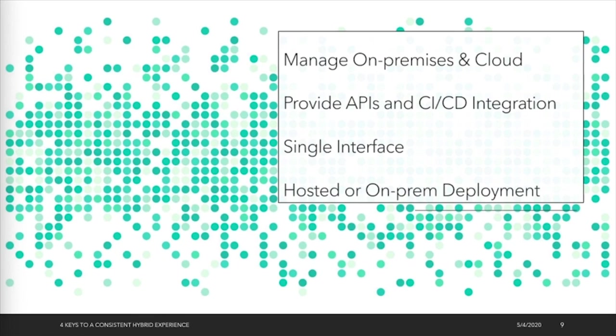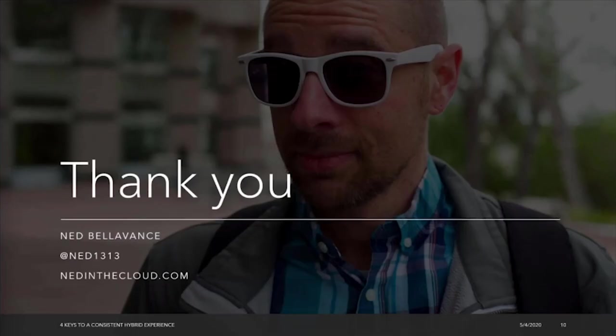To review my four keys to a consistent hybrid experience: first, it needs to manage on-prem and cloud — if it doesn't do that, it fails table stakes. Second, integrate into your automation tool chains — it needs APIs and CI/CD integration. Third, it needs to be a single interface — you don't want to jump between different windows for different environments. And lastly, it needs a hosted or on-prem deployment model — both need to be available. Those are my thoughts. I'm Ned Belevance, @ned1313 on Twitter and nedinthecloud.com.